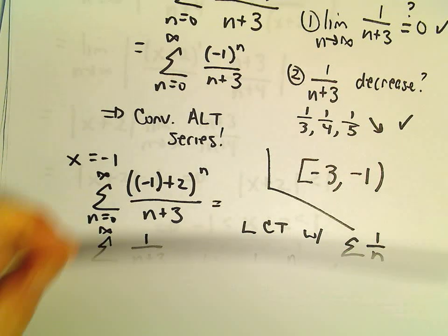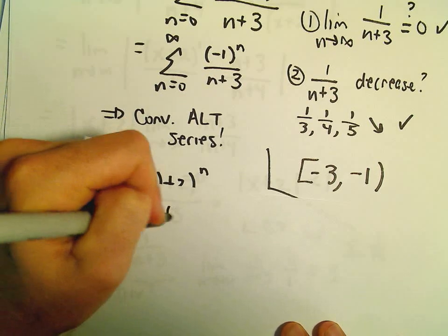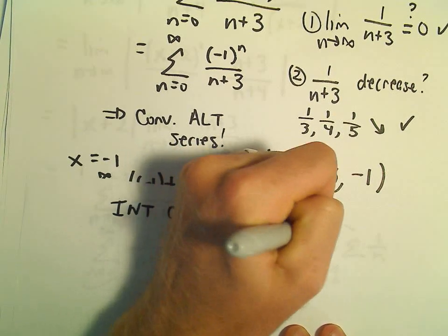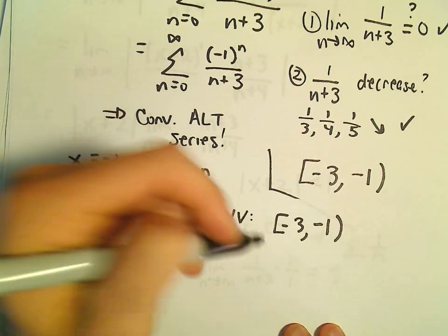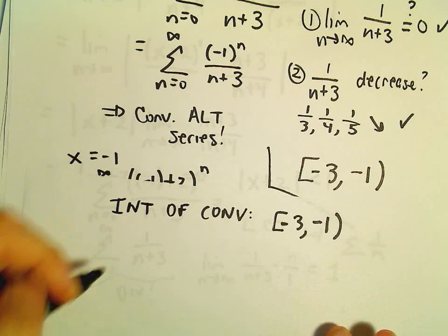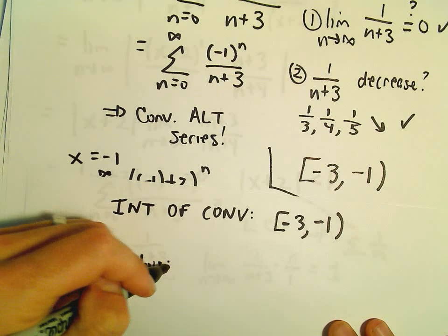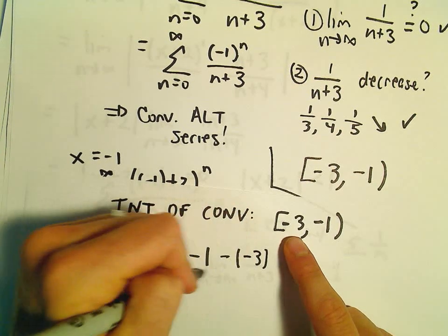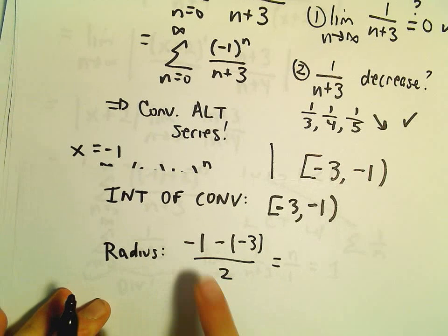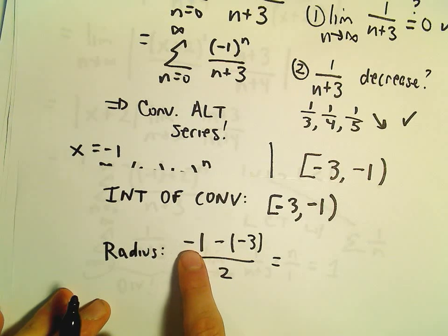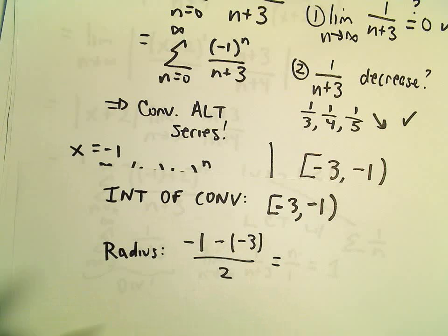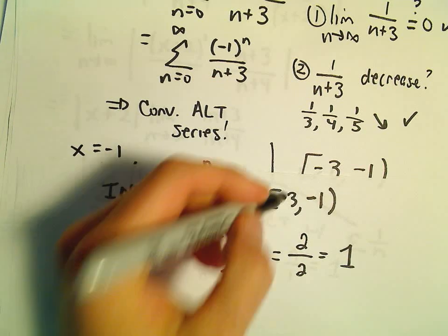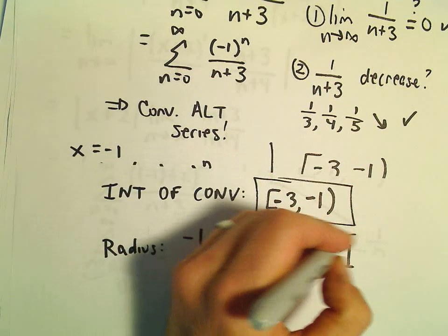So our interval of convergence goes from negative 3, including negative 3, up to negative 1, not including it. To get the radius of convergence, we take the length of the interval: negative 1 minus negative 3 over 2, which gives us negative 1 plus 3 equals 2, divided by 2 — a radius of positive 1.